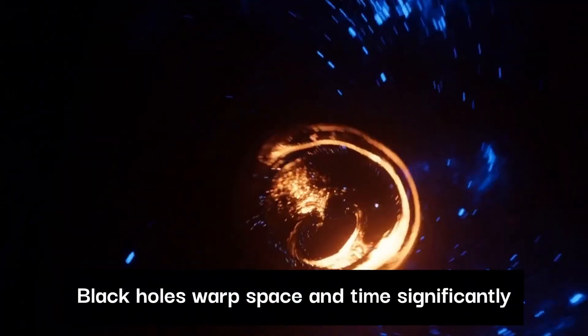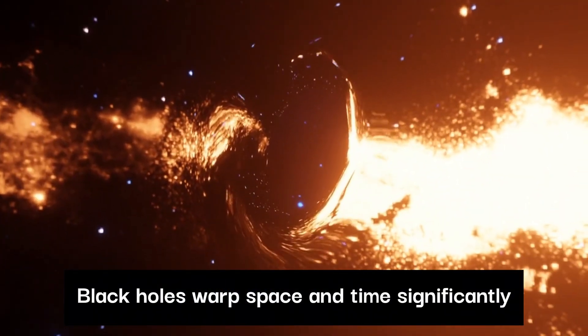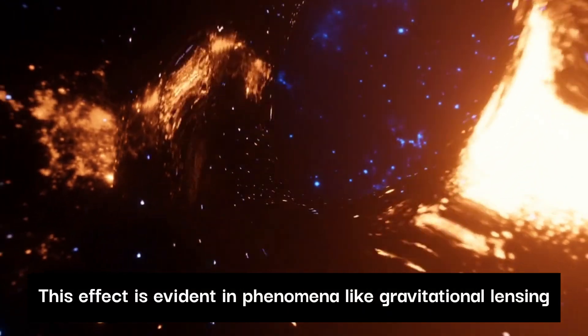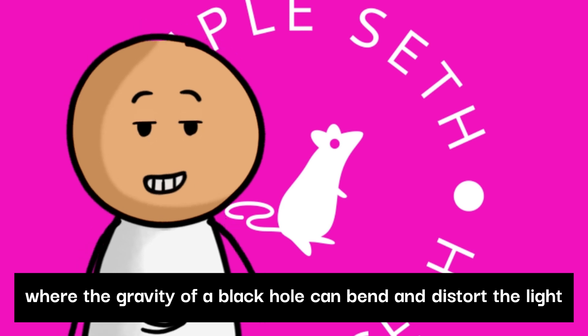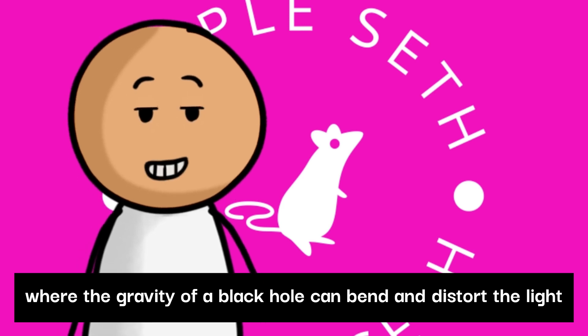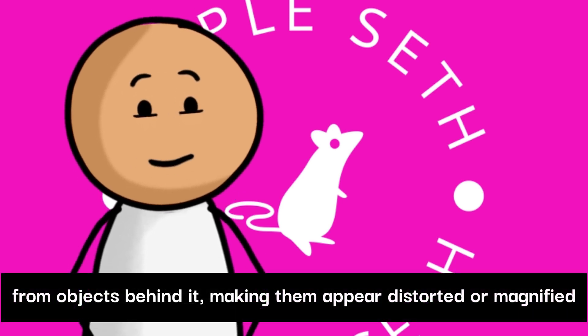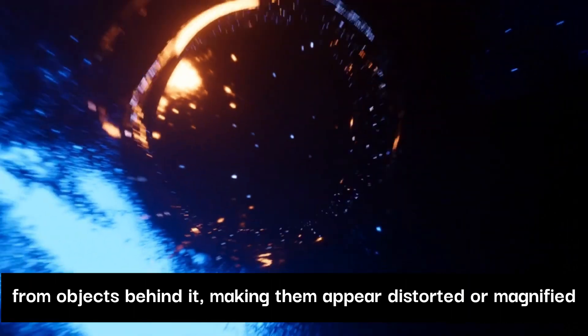Black holes warp space and time significantly. This effect is evident in phenomena like gravitational lensing, where the gravity of a black hole can bend and distort the light from objects behind it, making them appear distorted or magnified.